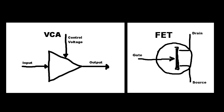If we look at the two diagrams, we see a very similar concept: a block with in-out terminals where signal is allowed to flow, and a third pin that modulates the gain-reduction.